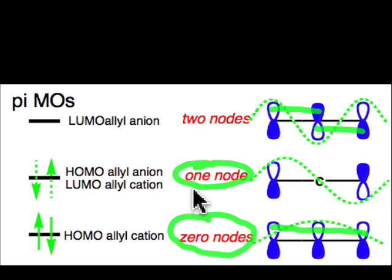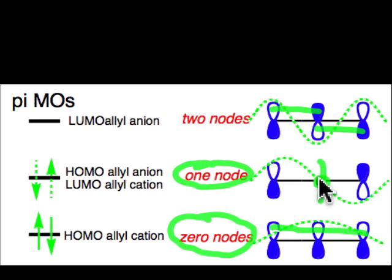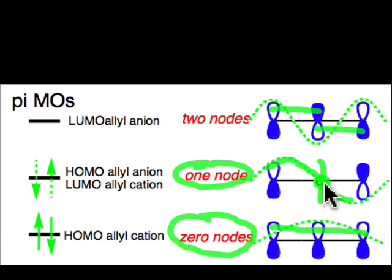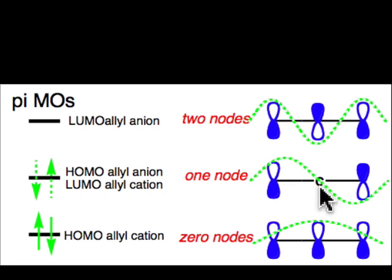How do we take a three atom system and generate one node? We would expect the node to be centered right on that center atom. And if there's a nodal point, that means that the coefficient is going to be zero. That means we have a sign inversion at that position and so the value of the orbital has to be equal to zero. In other words, there is a vanishing contribution of this atom's p orbital in that second molecular orbital.